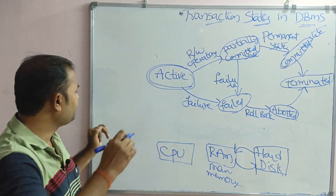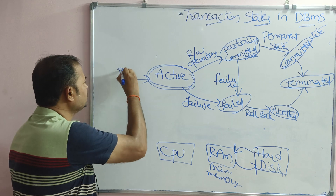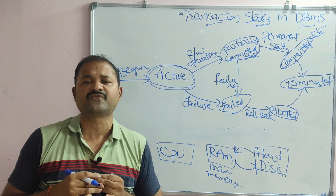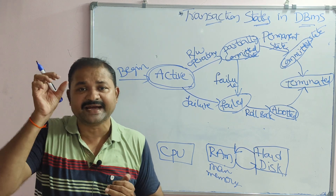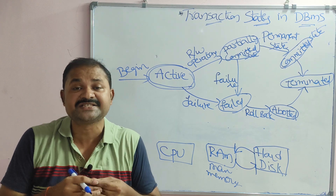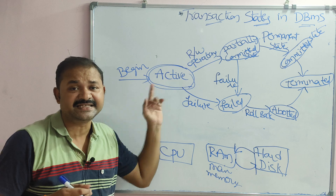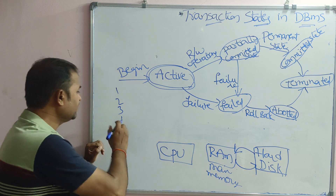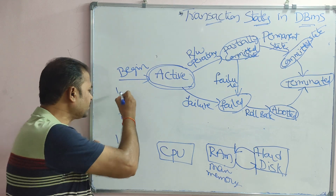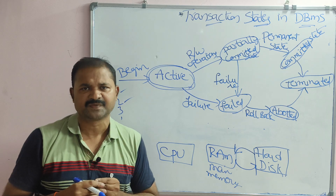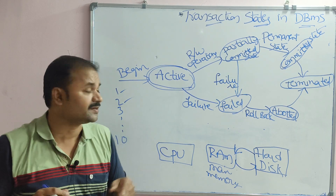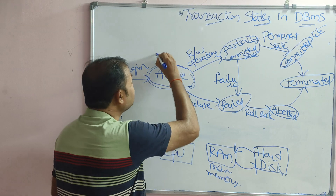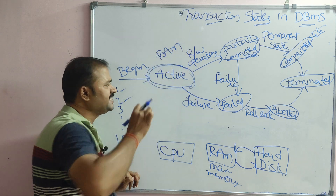The first state is the active state — this is the beginning. A transaction is a collection of instructions, so when any instruction of the transaction is executing, whether it is the first, second, or third instruction, we say the transaction is in active state. Active state means the transaction is in RAM.